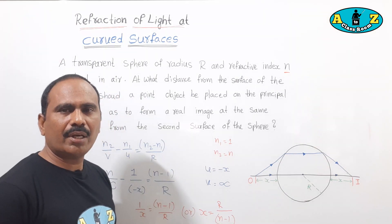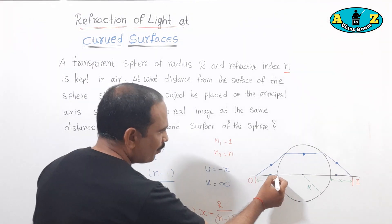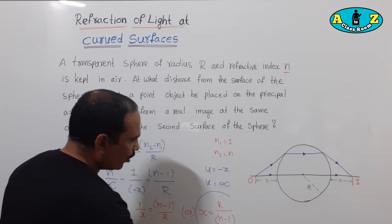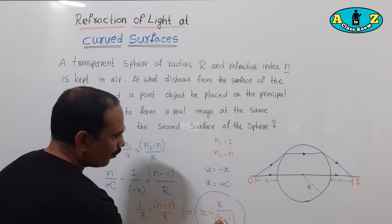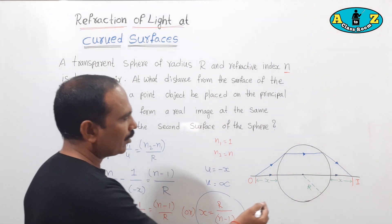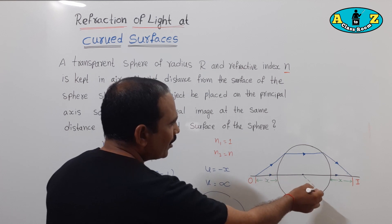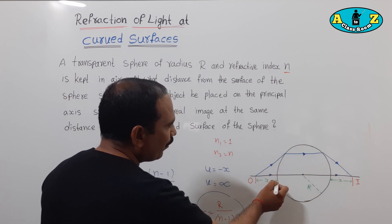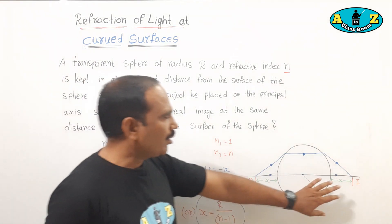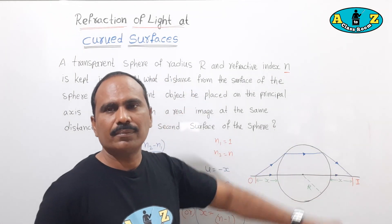From this equation, we can understand that the object distance from the first surface is x equal to r divided by (n minus 1).